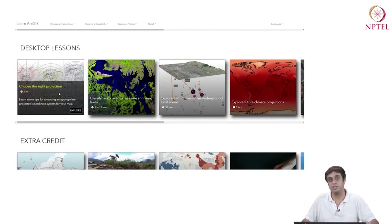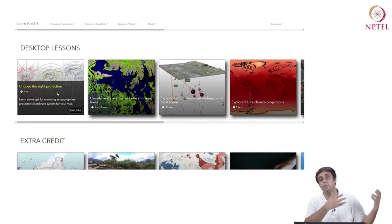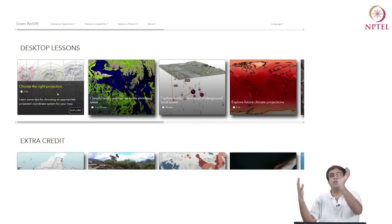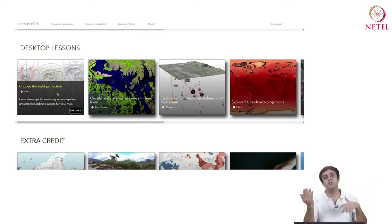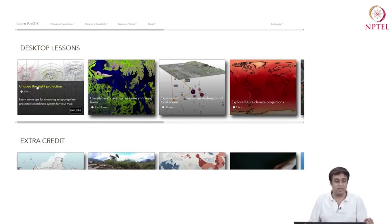For example, there is a lesson called 'choose the right projection'. We have looked at our lectures and we know what geographic projection systems are, why they are so important — for example, the world geodetic system WGS 1984, and the whole idea of projecting the sphere of the earth onto a two-dimensional plane. You can actually study the same thing in detail here by clicking on 'choosing the right projection'. I recommend you go through this particular session.